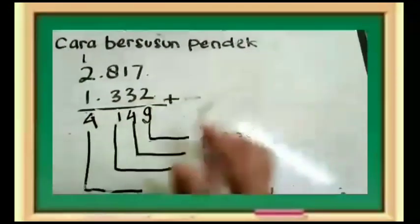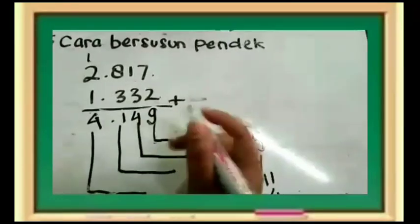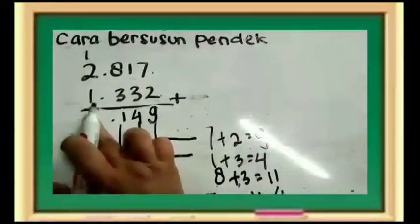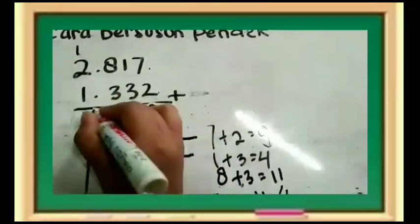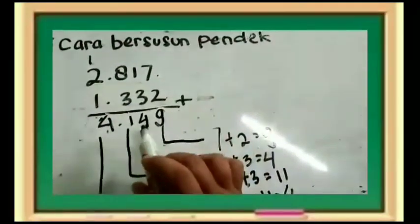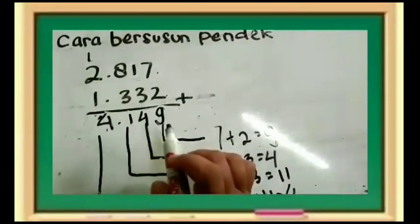Jadi jumlahnya empat ribu. Kita perbaiki dulu. Empat ribu seratus empat puluh sembilan.